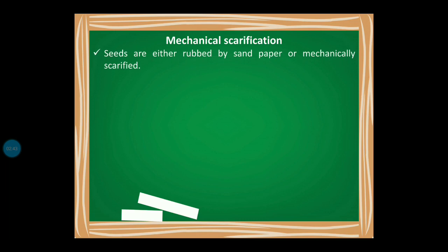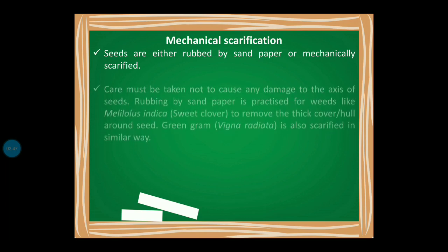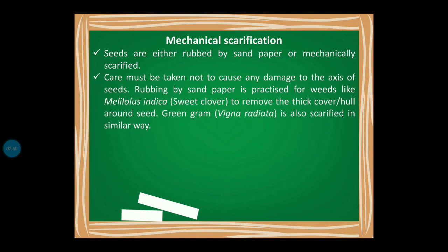In mechanical scarification, the seeds are either rubbed by sandpaper or they are mechanically scarified. Care must be taken not to cause any damage to the embryo of the seeds. We have to carefully do it so that the embryo will not be damaged. If the embryo is damaged, then the seed will not germinate.